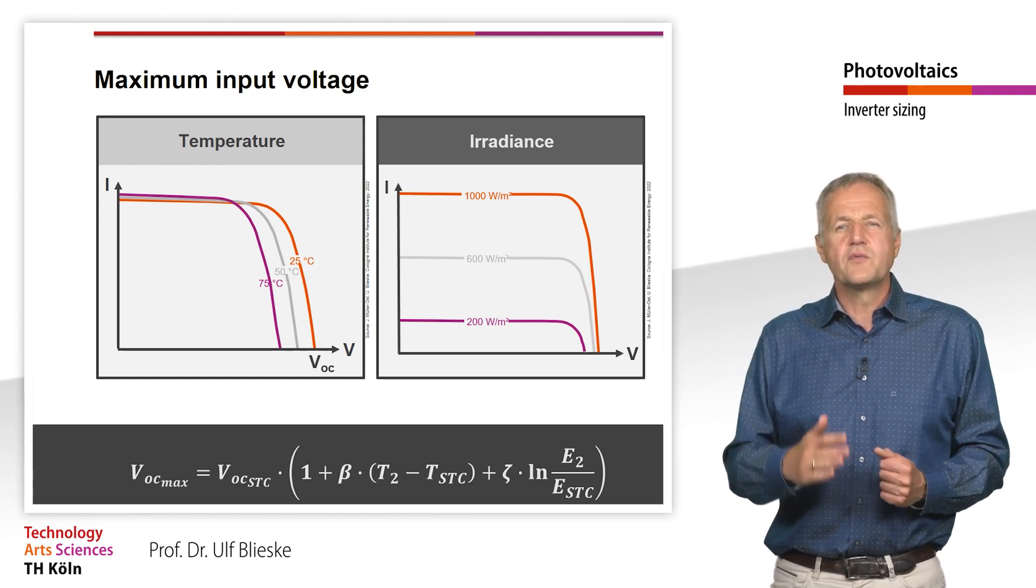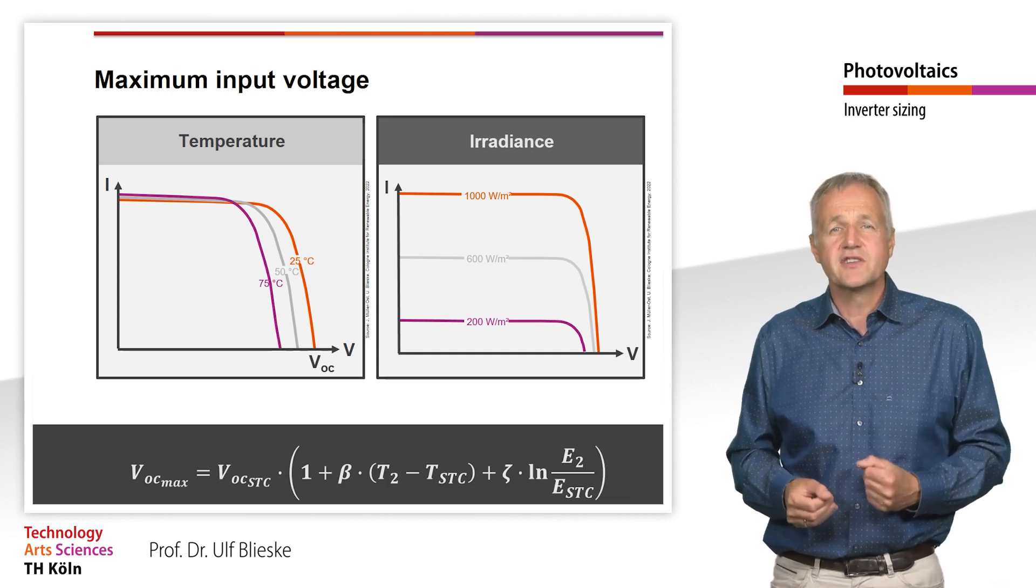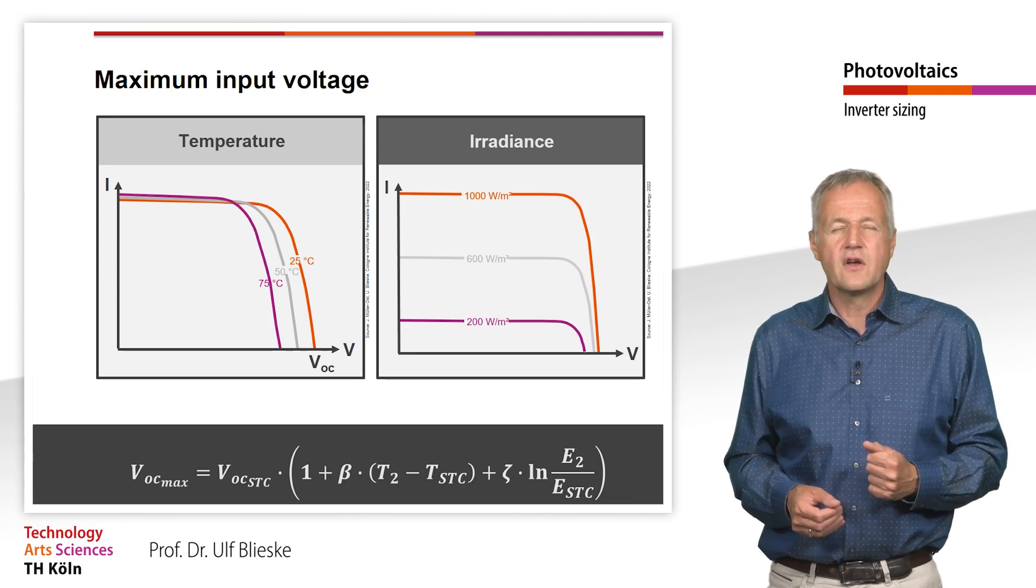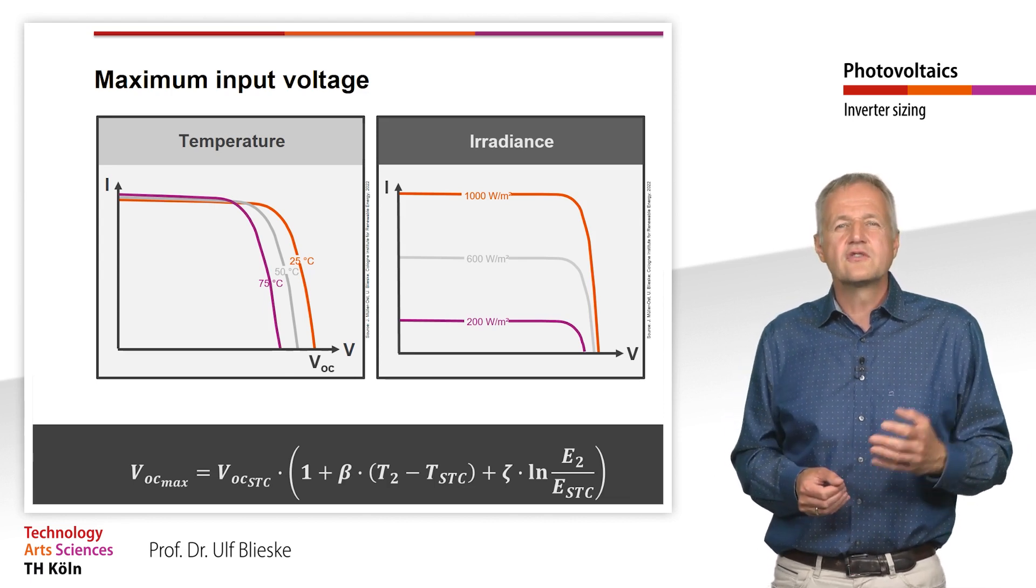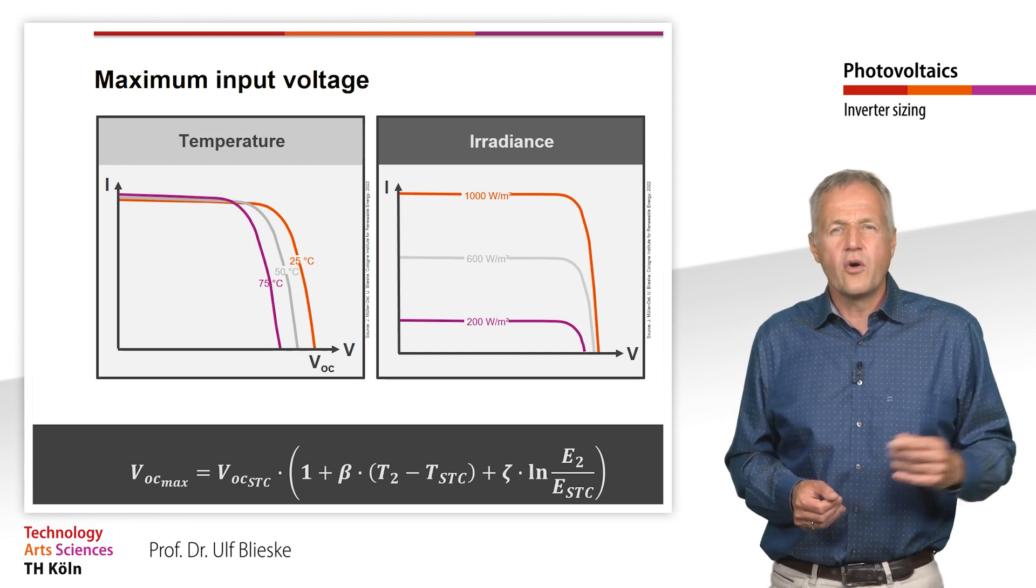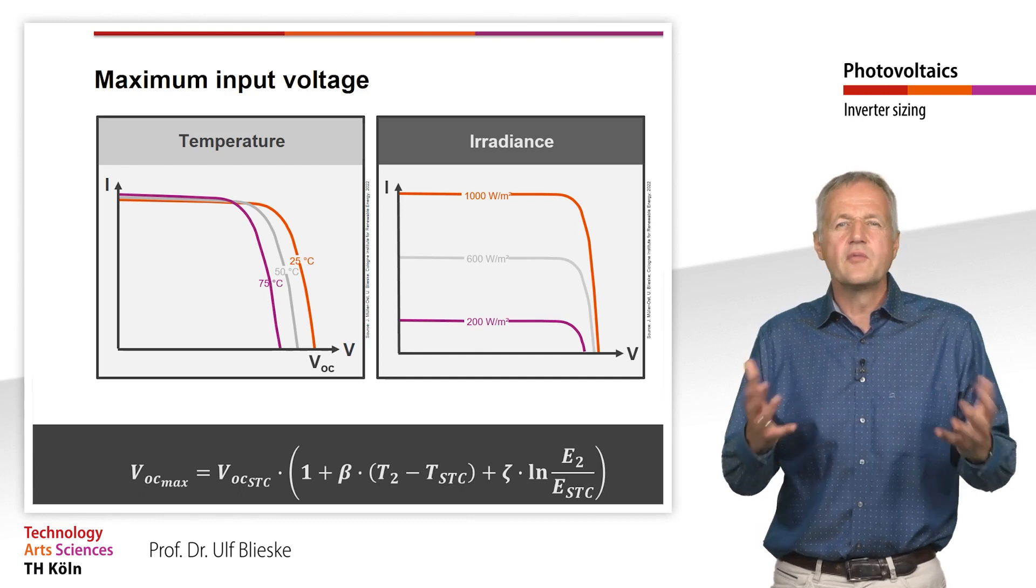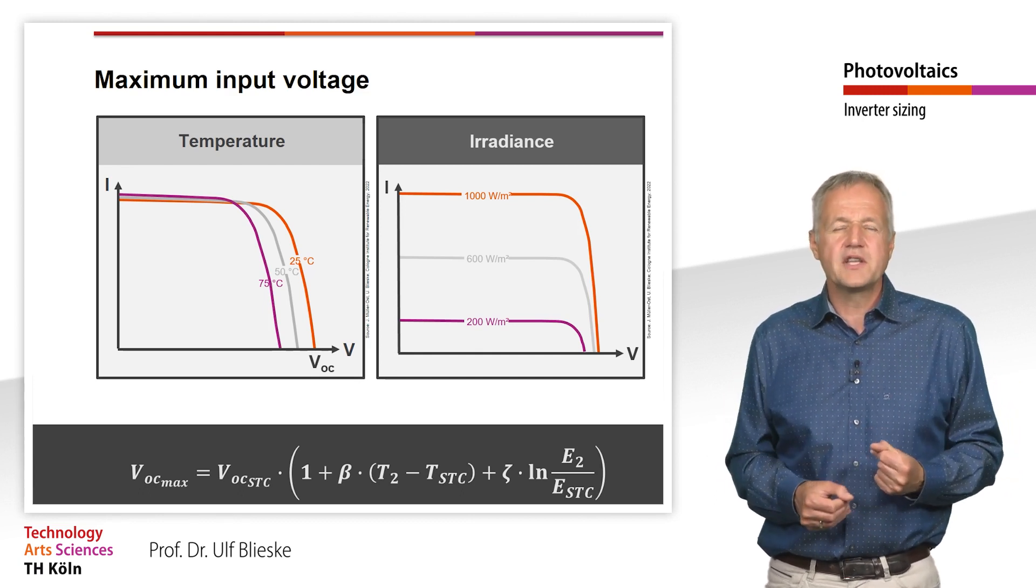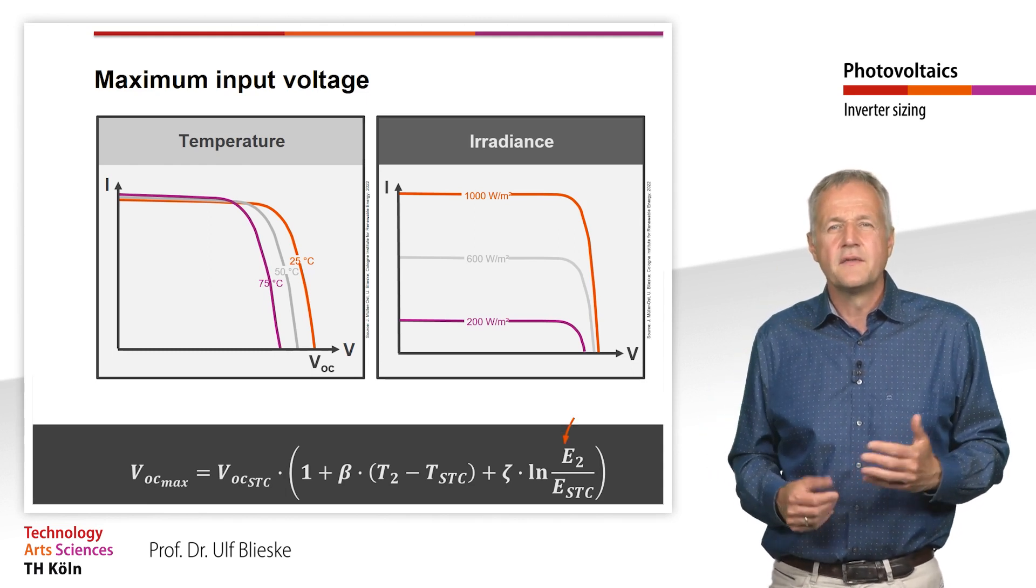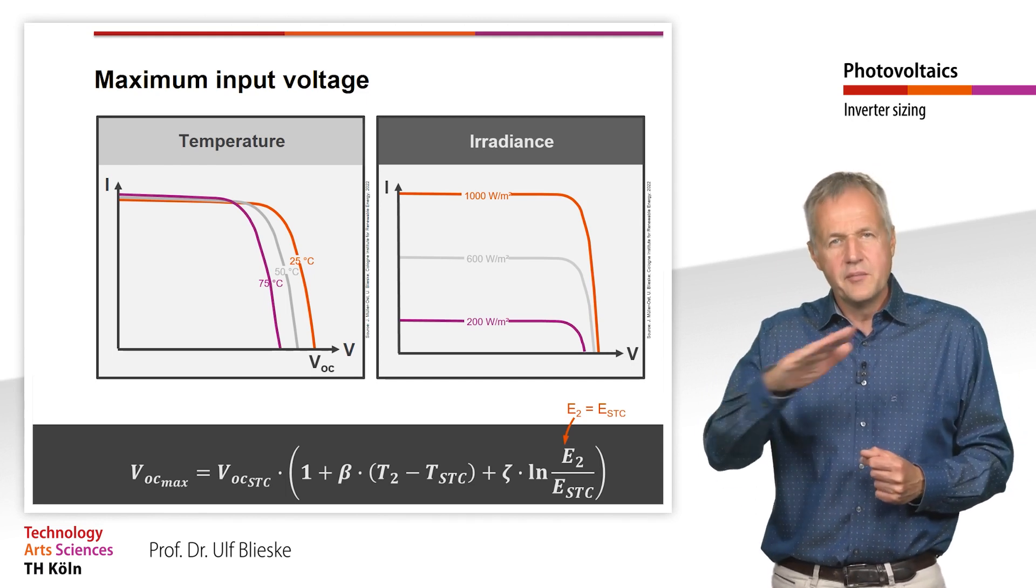This mainly depends on the location and the orientation and the inclination of the solar modules. If the modules are installed with a steep tilt angle, high irradiance at low temperature is definitely possible in winter with well back-ventilated modules. However, due to the logarithmic dependency, the irradiance has a much smaller overall effect on the voltage than the temperature. Thus, we assume an irradiance of 1000 W per square meter for the calculation of the highest open circuit voltage. In the equation for the open circuit voltage, the last term is therefore eliminated.